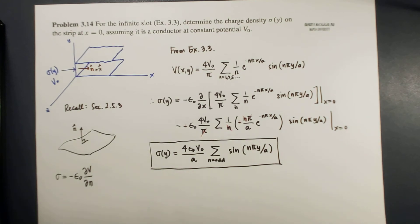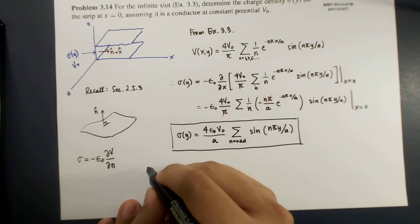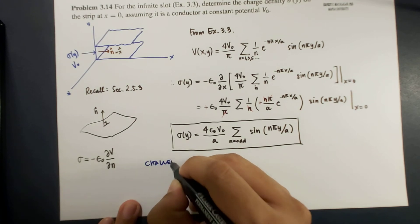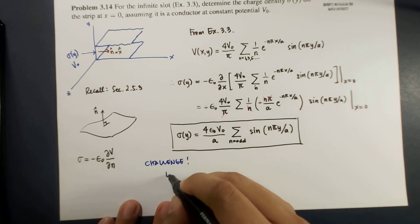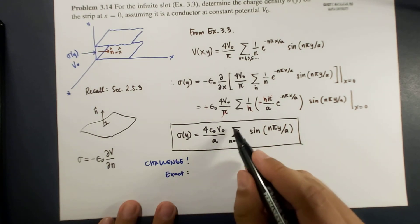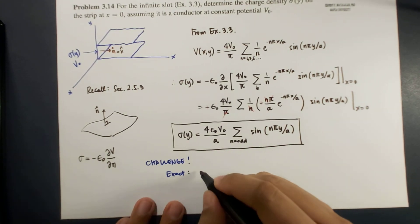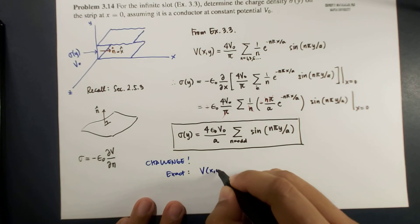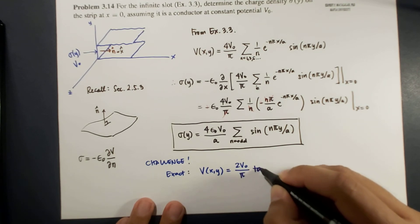Okay, now I have a challenge for you. Now, as you remember the exact solution. So the exact solution, remember this is just a series, an infinite series. So if we have an exact solution, this is 2V0 over a which has been discussed with you before.